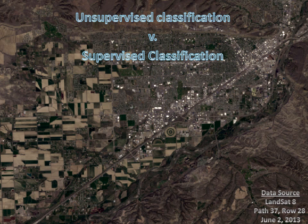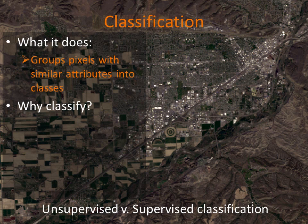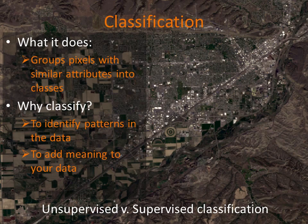As we move through the module, we'll use this Billings, Montana data to illustrate the basic elements of and differences between the two approaches. First, we need to be sure we're on the same page regarding the definition of classification. In remote sensing, classification is a workflow that permits you to group pixels with similar spectral characteristics together into classes. The process of classification helps you identify patterns in the data and helps add meaning to your data.